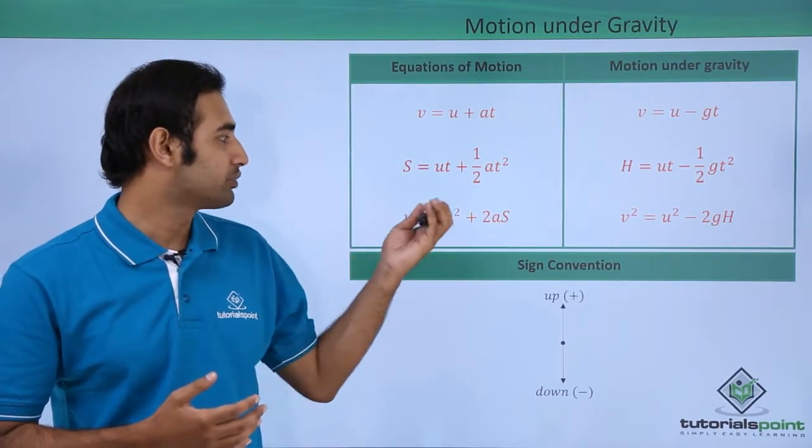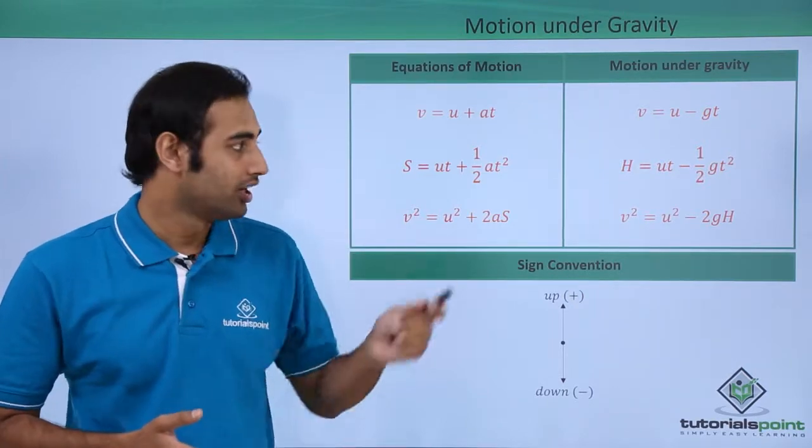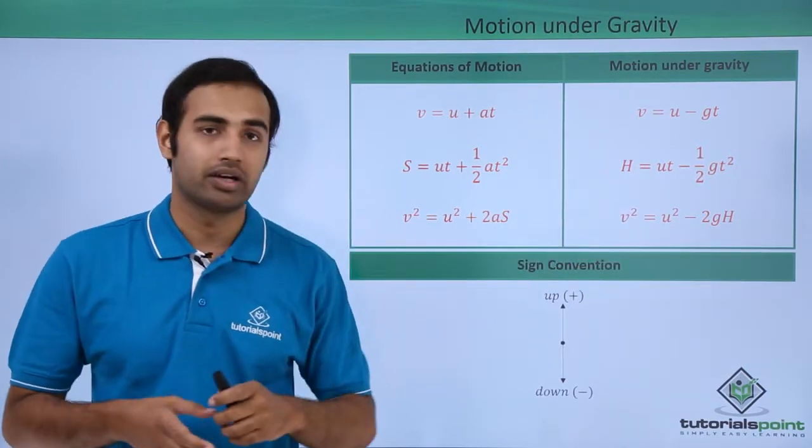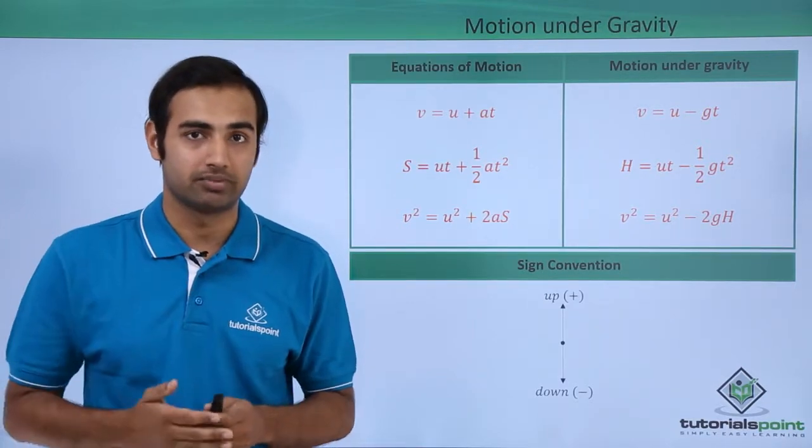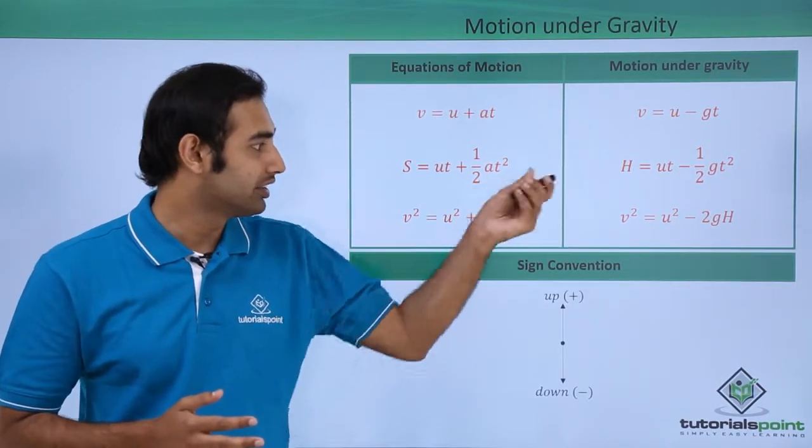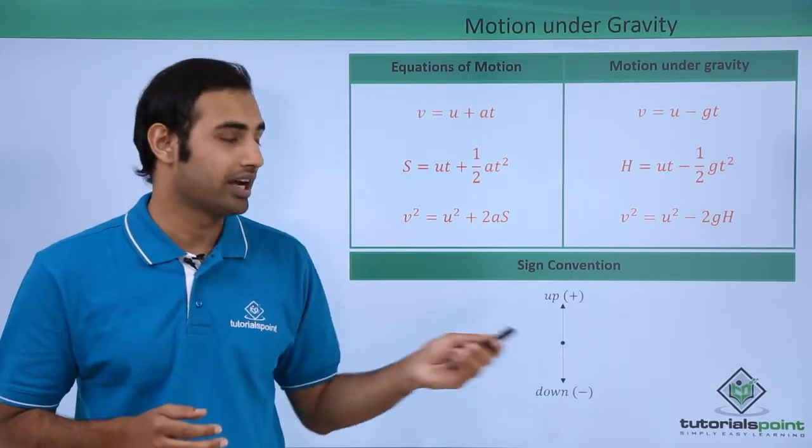And the final equation is v square is equal to u square plus 2as, which becomes v square is equal to u square minus 2gh. Once again height takes the place of displacement, and acceleration is replaced by minus g because g will be acting downwards.